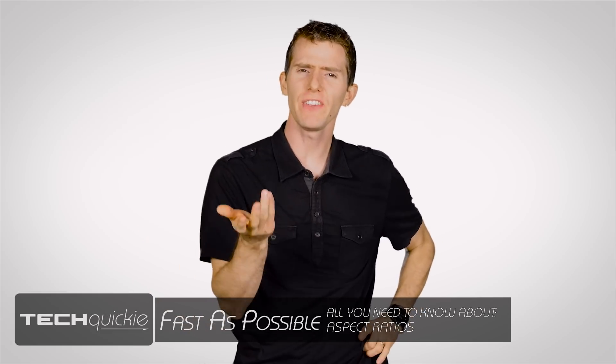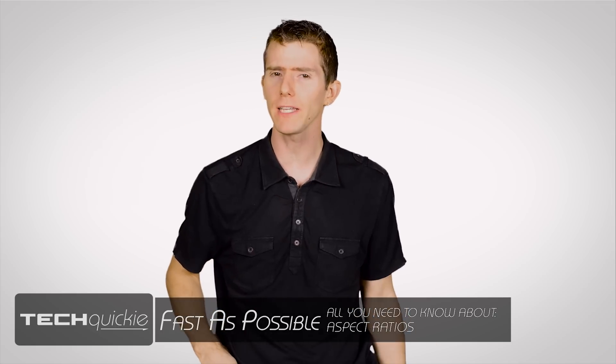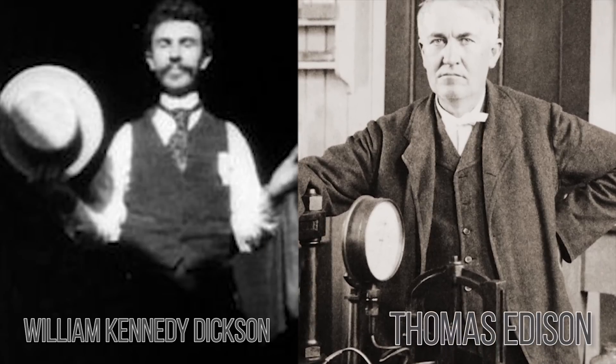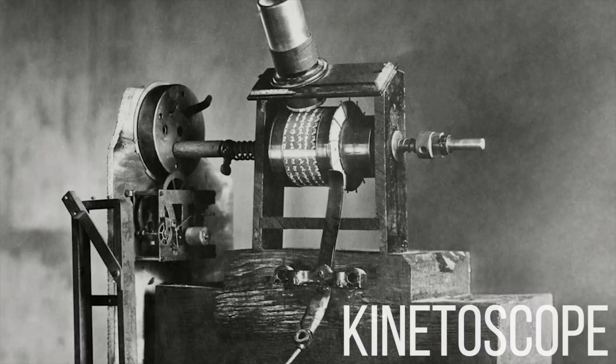Have you ever wondered why most TVs and monitors were that boxy, almost square shape until recently? Well, back in the 1890s, Thomas Edison and his assistant William Kennedy Dixon introduced a device for viewing films called the Kinetoscope.